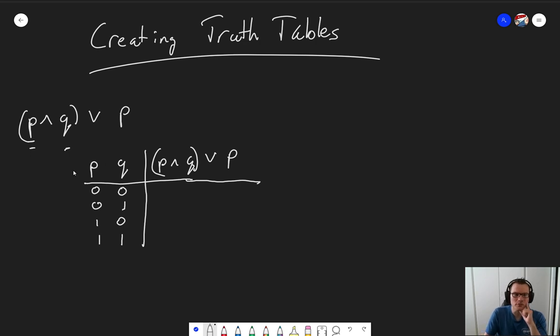For this first method, what we do is beneath every iteration or every repeat of one of our input variables, we start by writing down its value, so P is 0, 0, 1, 1, Q is 0, 1, 0, 1, and P again, 0, 0, 1, 1.